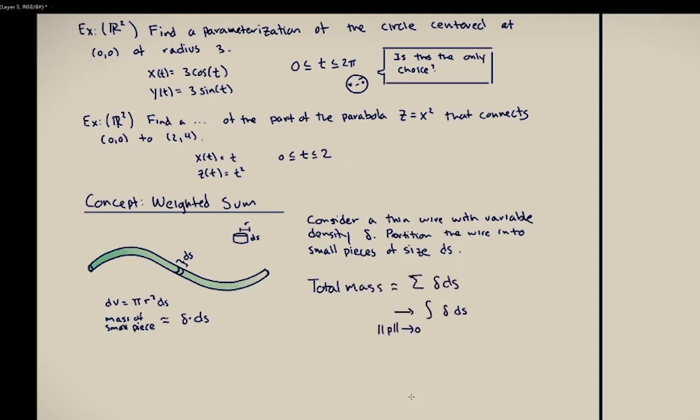And then I'm sure you're pretty familiar with the process from here out. Essentially the mass of a small piece is just going to be the density of that piece multiplied by some measure of the size of that piece.